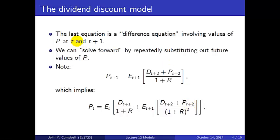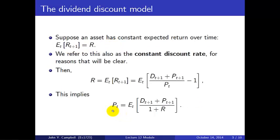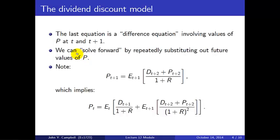That equation is what's called a difference equation, which means it involves values of price at both time t and time t+1. On the left we have the price at time t; on the right we have the dividend and price at time t+1. This same equation must hold at time t+1, so we can substitute in for P_{t+1} using the time t+1 version of the equation. This is the procedure of solving a difference equation forward by repeatedly substituting out future values of P.